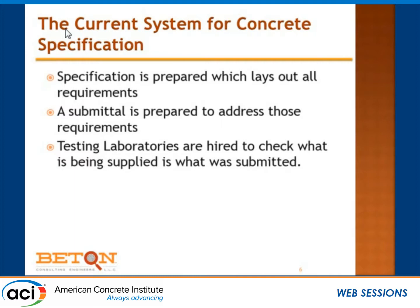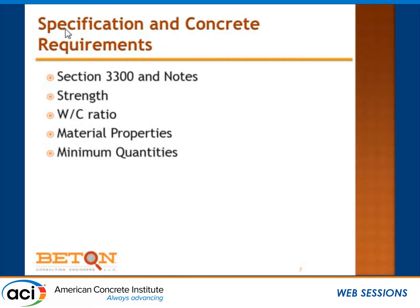We can find these specifications in Section 3300 of the AIA master specification and on the structural notes — sometimes written by people who may have a passing familiarity with one another, and sometimes not. Most of the time we'll see a specification for strength because the code requires it, a specification for water-to-cement ratio because in many cases the code requires it, and some material properties.